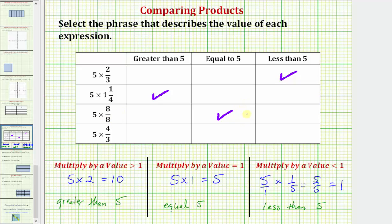For our last example, we have five times four-thirds. Here we have an improper fraction. Four-thirds means we have four copies of one-third. Four-thirds is greater than one. We multiply five by a value greater than one, the product will be greater than five.